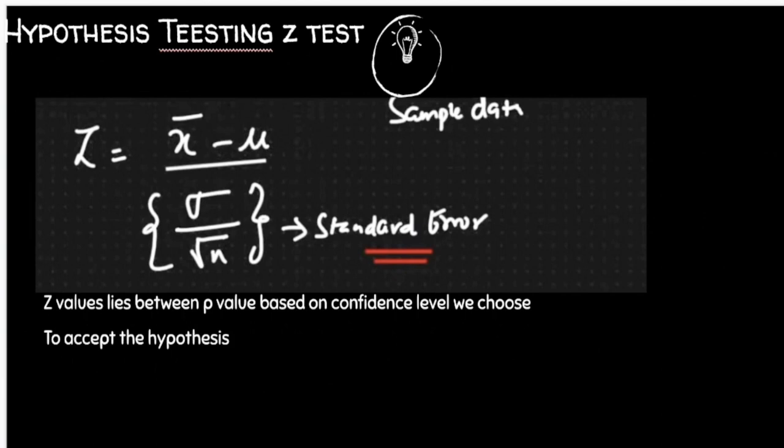When we work with a sample, we divide by the standard deviation divided by the square root of n, where n is the sample size. If we are working with the full population instead, we simply divide by the standard deviation alone.